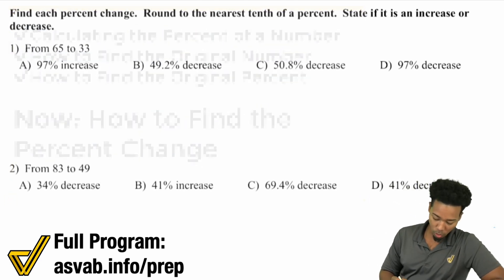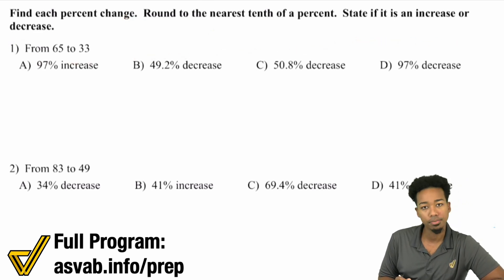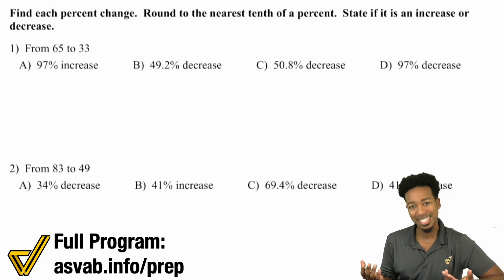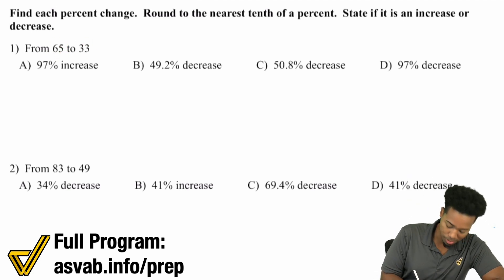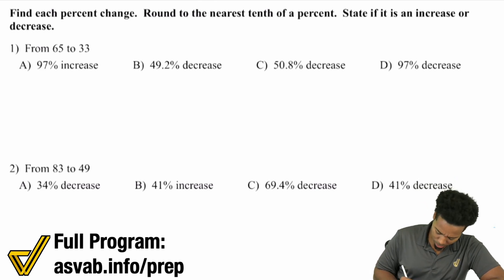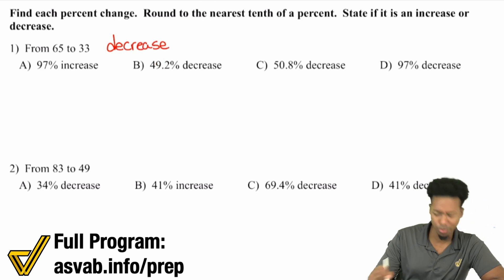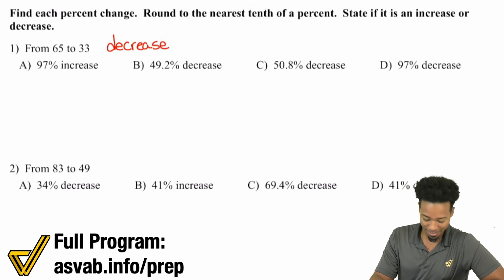Let's understand what the question is. We're being asked to find each percent change, round to the nearest tenth of a percent, and state if it's an increase or decrease. First, we need to understand what changed. Are we going up or down from the original number? From 65 to 33, that's a decrease. So we can eliminate answer A, it's not going to be an increase.